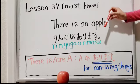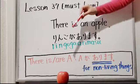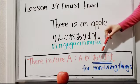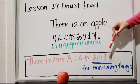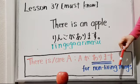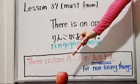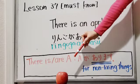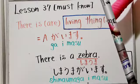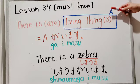リンゴがあります。But one thing you need to be careful about is that が あります can be used for non-living things. Apples are non-living things, right? Then, how about living things?